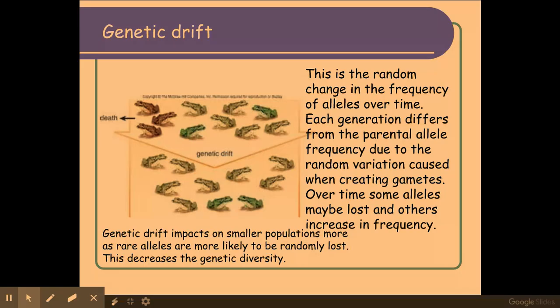Genetic drift will impact smaller populations a lot more than larger ones, because in smaller populations rare alleles are more likely to be lost — or equally, these rare alleles could increase as well — and this small population can end up very different to the large population. Normally what happens within smaller populations is you get a decrease in genetic diversity due to genetic drift.